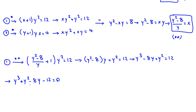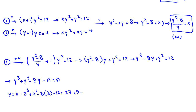To solve the cubic, we test small integer values. Checking y = 3: 3³ + 3² − 8·3 − 12 = 27 + 9 − 24 − 12 = 36 − 36 = 0. So y = 3 is a root, and (y − 3) is a factor.